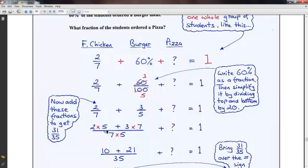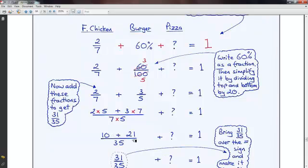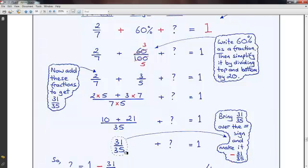Now, you've got ten. Five times two is ten. Three times seven is twenty-one. There's the ten. There's the twenty-one. And when you add them together, you get thirty-one over thirty-five.